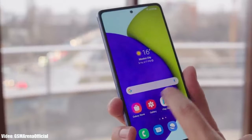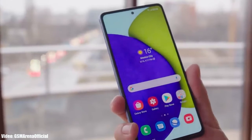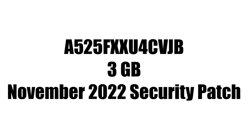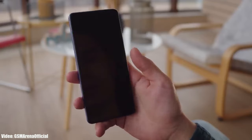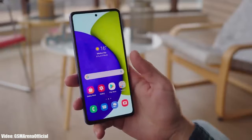You can check for the update by going into Settings, then About Phone, and then the Software Update menu. The update has a build number and is around 3 GB in size, and it includes the latest November 2022 security patch.